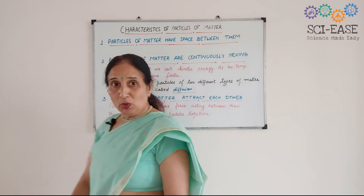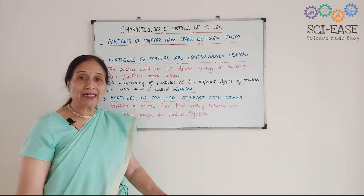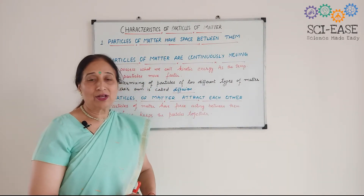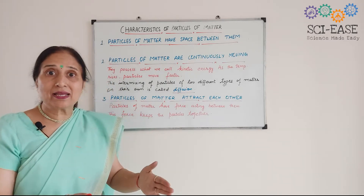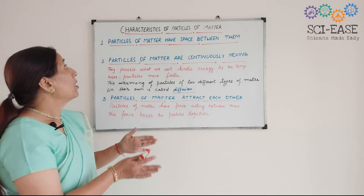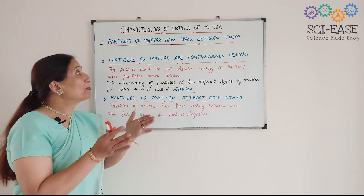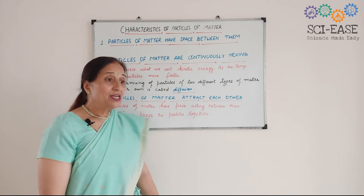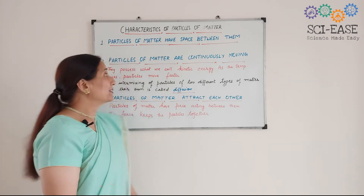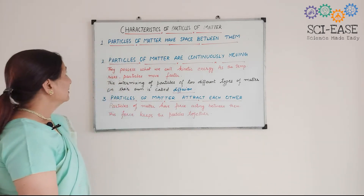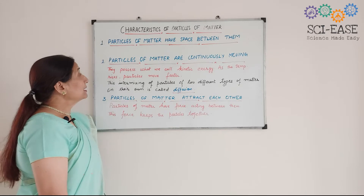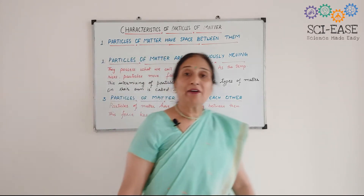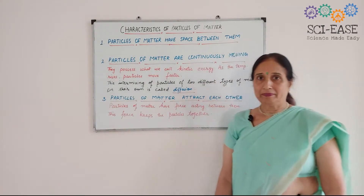We know that matter is made up of particles. So what are the characteristics of these particles of matter? The first characteristic is that particles of matter have spaces between them.